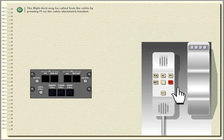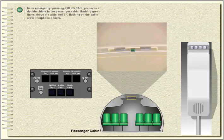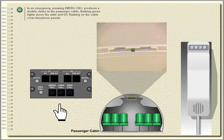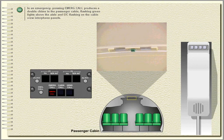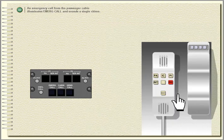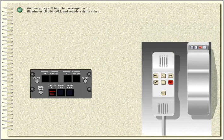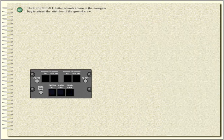The flight deck may be called from the cabin by pressing PI on the cabin attendant's handset. In an emergency, pressing emergency call produces a double chime in the passenger cabin, flashing green lights above the aisle, and EIC flashing on the cabin crew interphone panels. An emergency call from the passenger cabin illuminates emergency call and sounds a single chime.